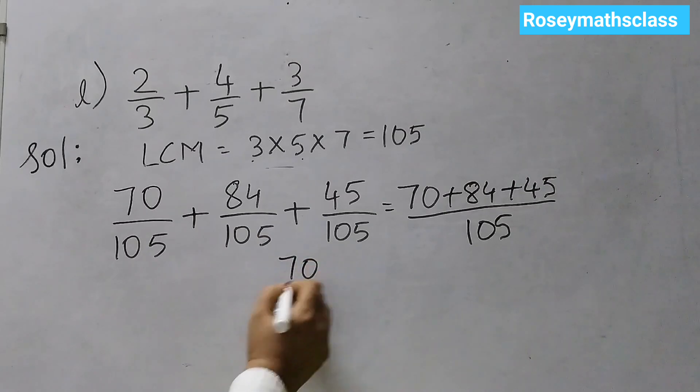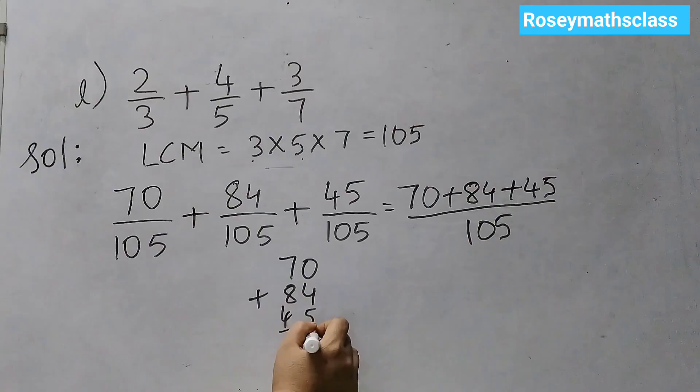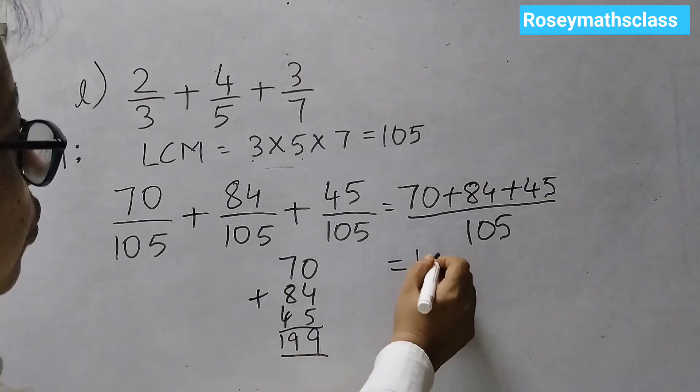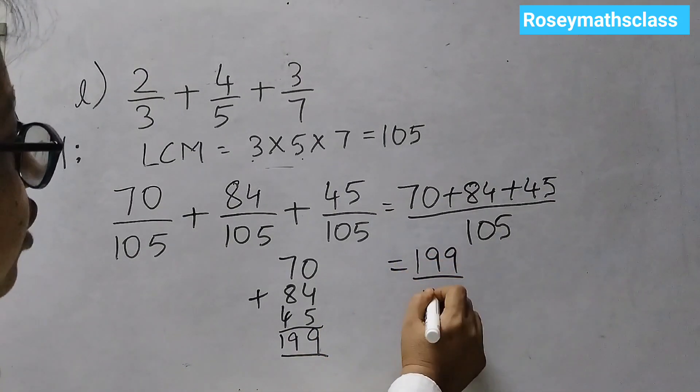Now, 70 plus 84 plus 45. 5 plus 4 is 9, 8, 12, 19. So, we are getting 199. 199 by 105.